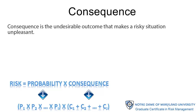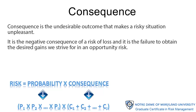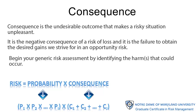Once the risk is identified, consequences occupy a central role in this modeling process. The consequence is the undesirable outcome that makes a risky situation unpleasant. It's the negative consequence of a risk of loss, or it can be the failure to obtain the desired gains we strive for in an opportunity risk. You should always begin your generic risk assessment process by identifying the harm or harms that could occur.